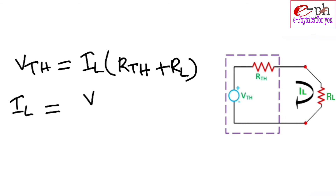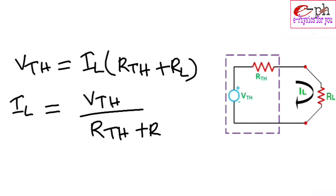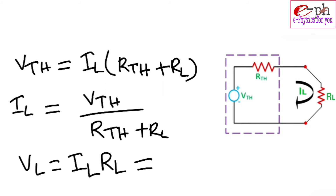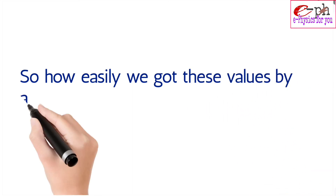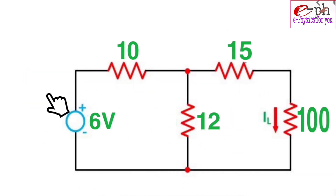Now we want to see how much voltage is dropping across the load resistance. The voltage drop VL = IL × RL. Substituting the value of IL, we get VL = (Vth × RL) / (Rth + RL). So how easily we get these values by applying Thevenin's theorem.